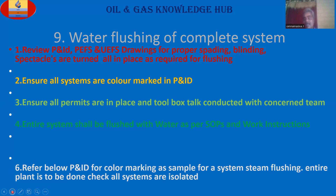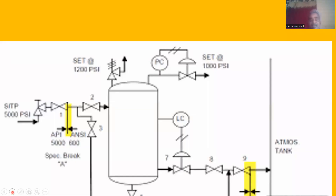Here is an example of a P&ID for color marking — as a sample for system steam flushing or water flushing where the entire plant systems are isolated. This P&ID diagram is only an example. There are different diagrams depending on process conditions and systems. The P&ID will have safety valves, relief valves, control valves, pressure control valves, level controllers, gate valves, and related items.